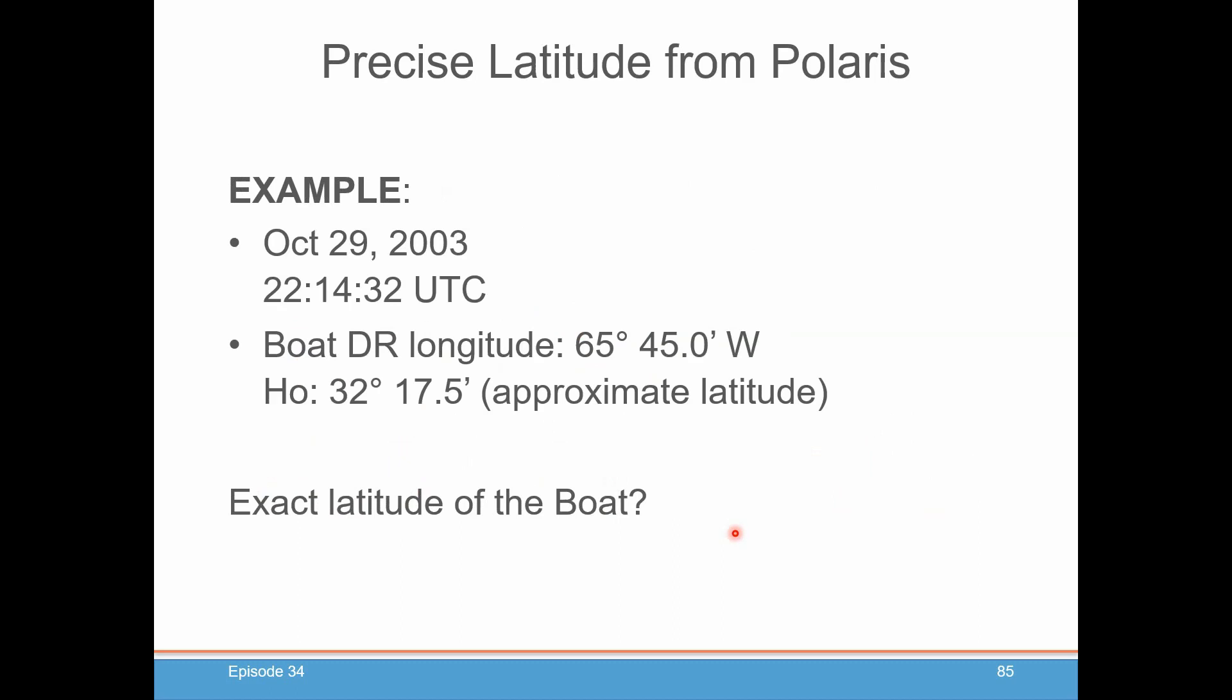So let's take an example. October 29, 2003, 22:14:32 UTC. And your boat DR longitude is 65 degrees, 45 minutes west. And your HO that you sighted Polaris was 32 degrees, 17.5 minutes. And we're going to call that your approximate latitude, close enough for doing this calculation.